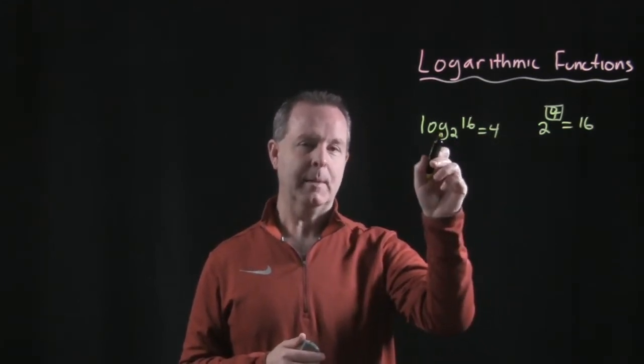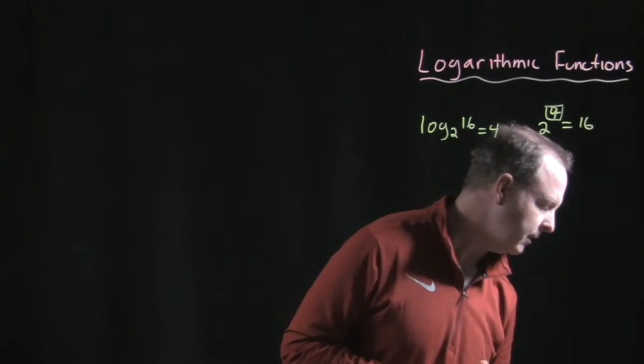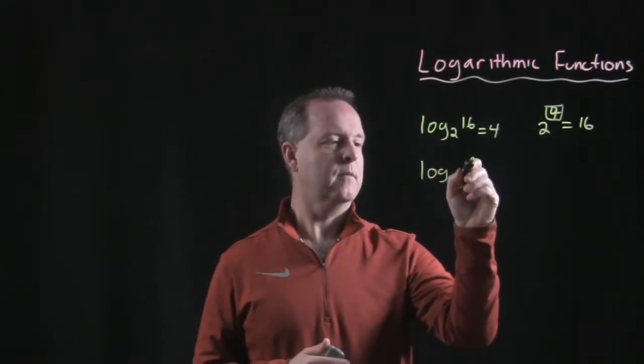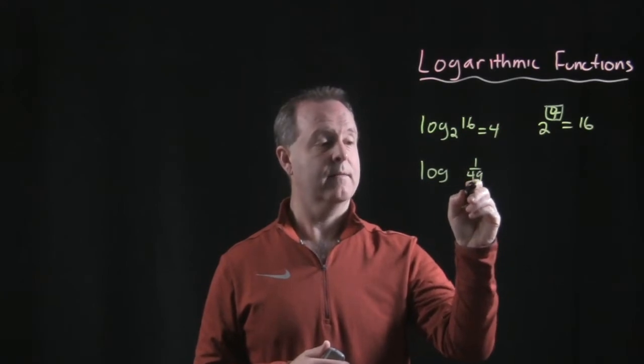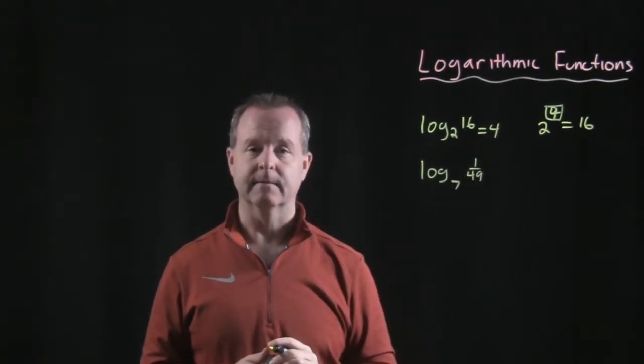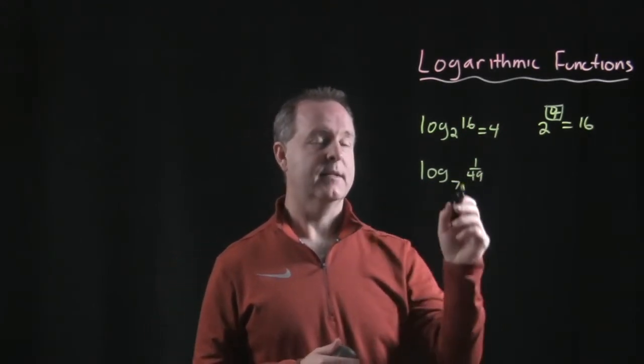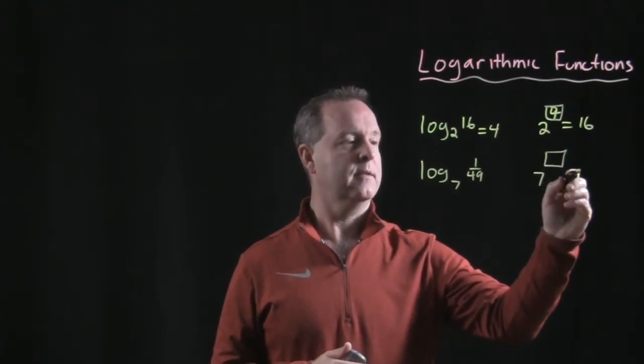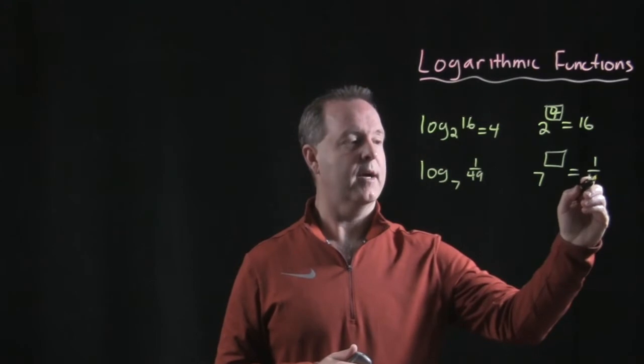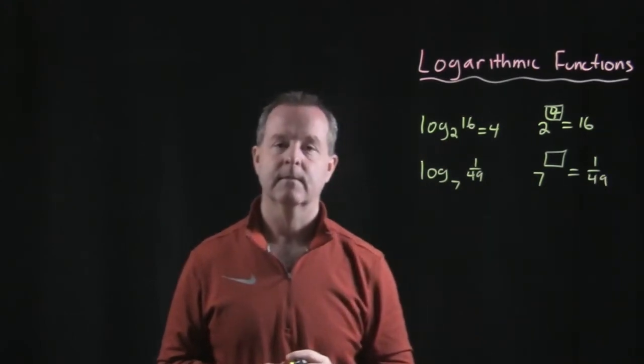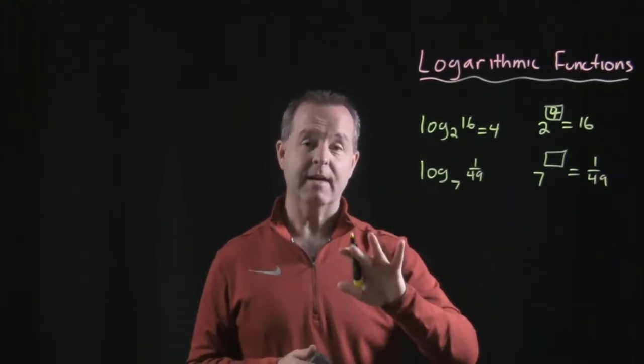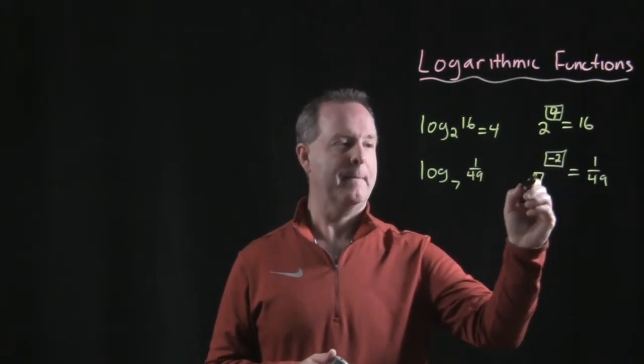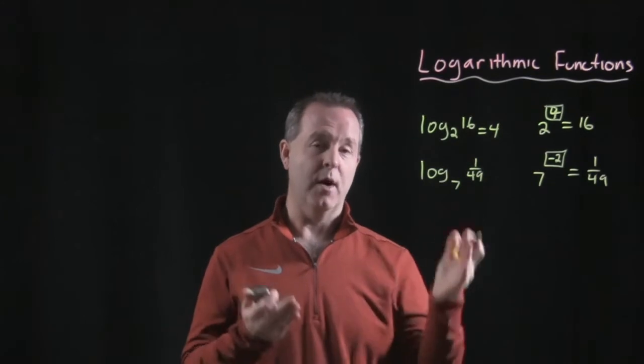Log of 1/49 base 7. How do we think about that? Same type of way: 7 to the what makes a 1 over 49? Remember our negative exponents. What would happen? This was a negative 2. 7 to the negative 2 makes it 1 over 7 squared, which is 1 over 49.